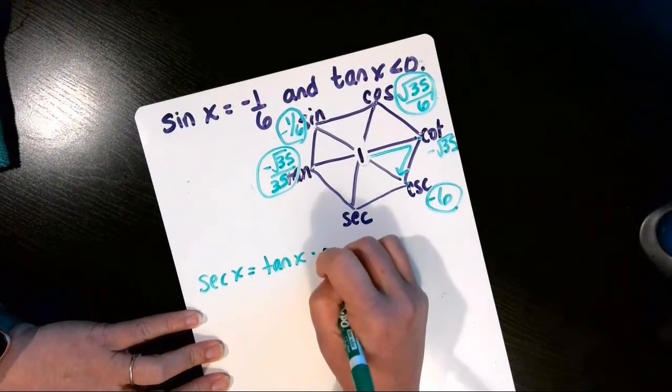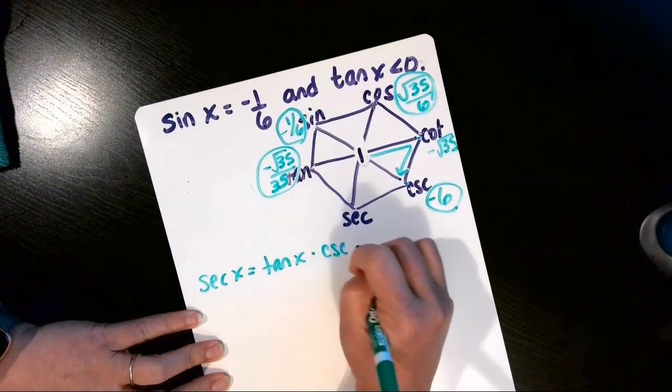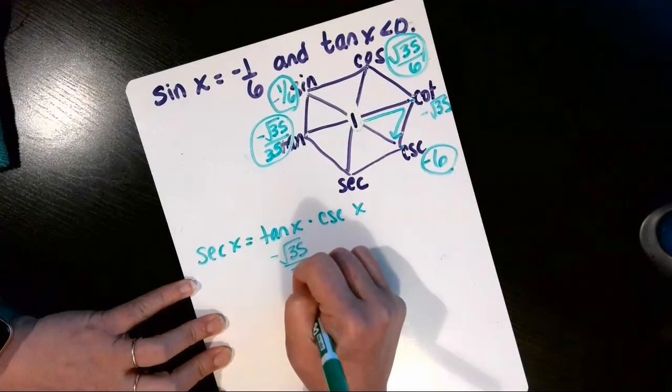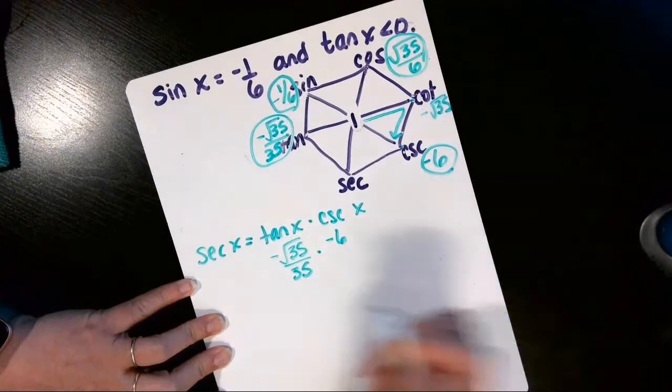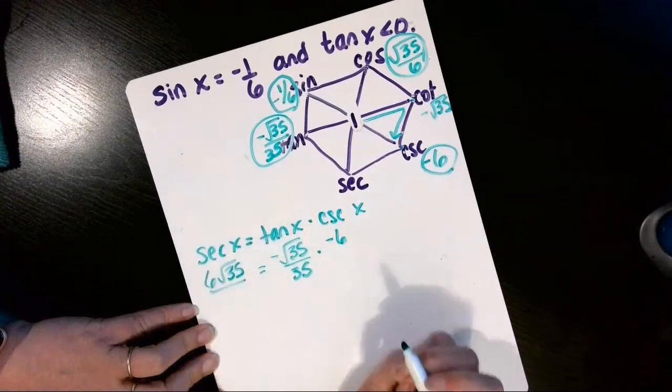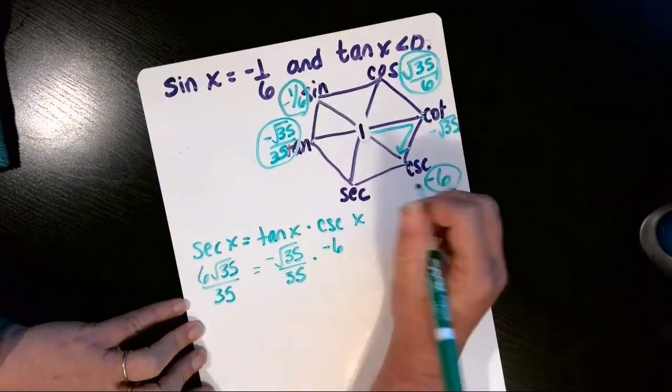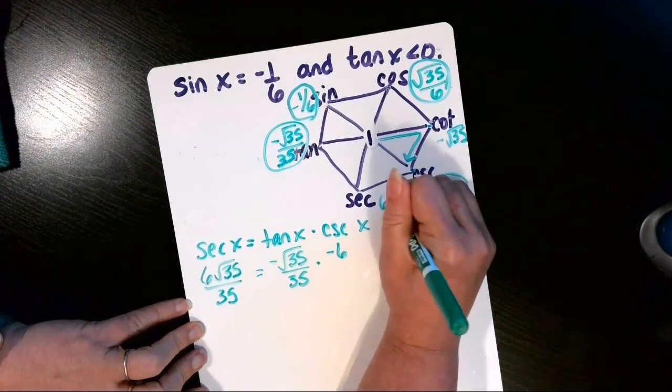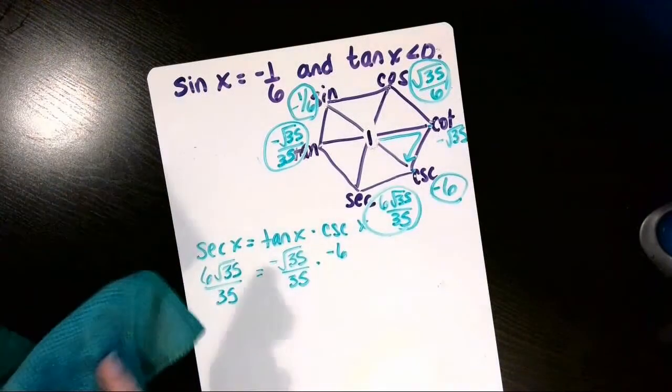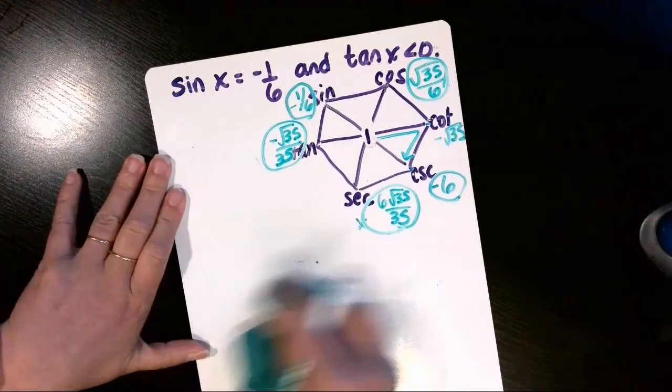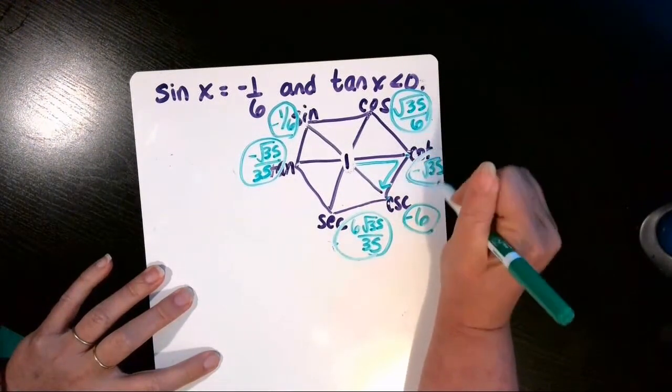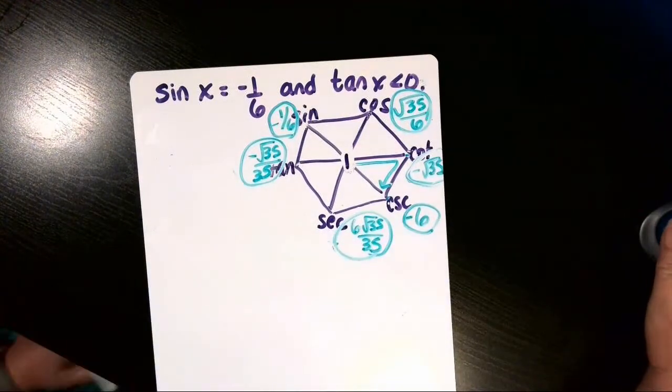The tangent was negative root 35 over 35, and cosecant was negative 6. A negative times a negative is a positive, so we get 6 root 35 and then that's over 35. So the secant is 6 root 35 over 35, and then we found all of the trig functions using the identities hexagon. Okay, hope that helps.